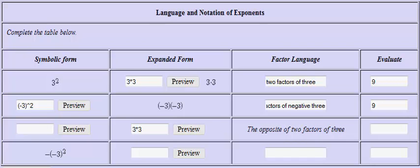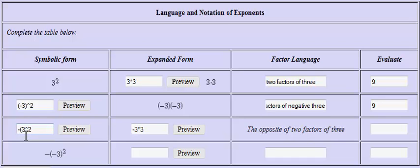In symbolic form, I'll click in the answer box and write negative three caret two — using shift+6 for the caret — which raises to the power of two. Because I did not put parentheses, it is equivalent to writing parentheses around just the three, meaning you take two factors of three, which is three squared, and then take the opposite of that. So this is the opposite of two factors of three. Whether you put the parentheses or not, it should come out the same.